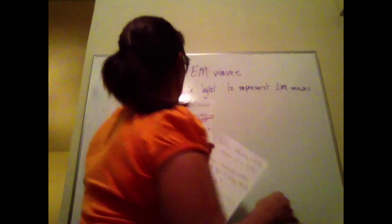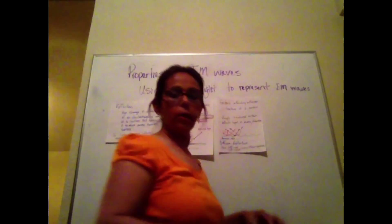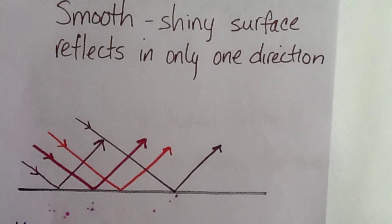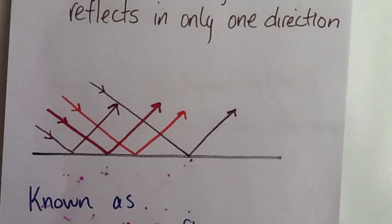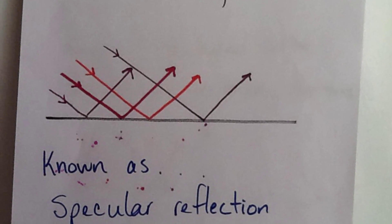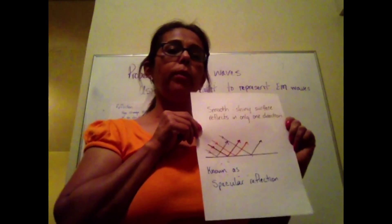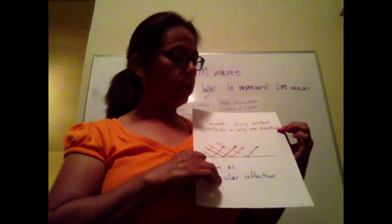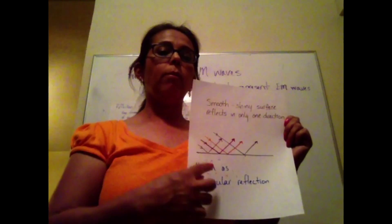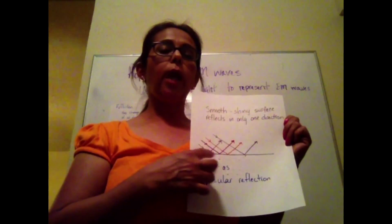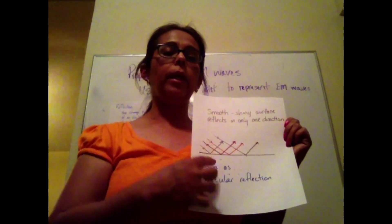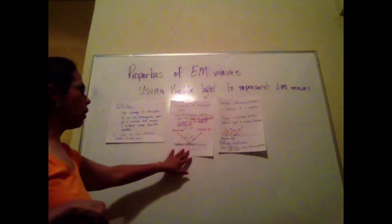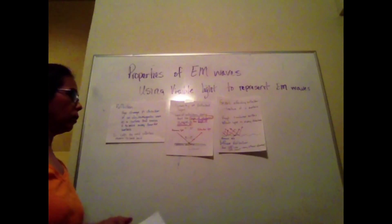If your surface is smooth and shiny — such as in a mirror or a body of water that is extremely still — we have a very smooth, shiny surface. As the light hits this surface, the angles are all equal to each other and it will form the image clearly. This is known as specular reflection, produced by a smooth, shiny surface where all the angles coming in are reflected out equally, consistent with the law of reflection where the angle of incidence equals the angle of reflection.